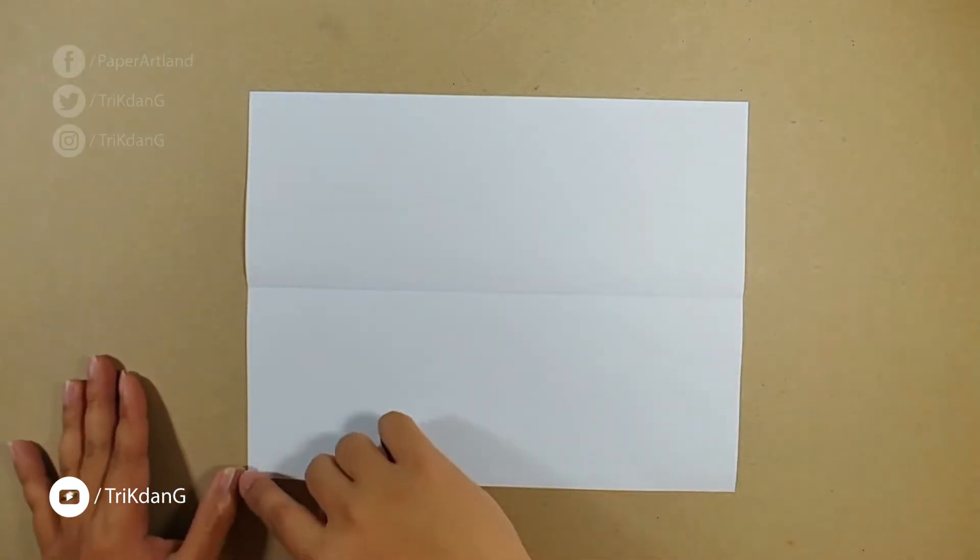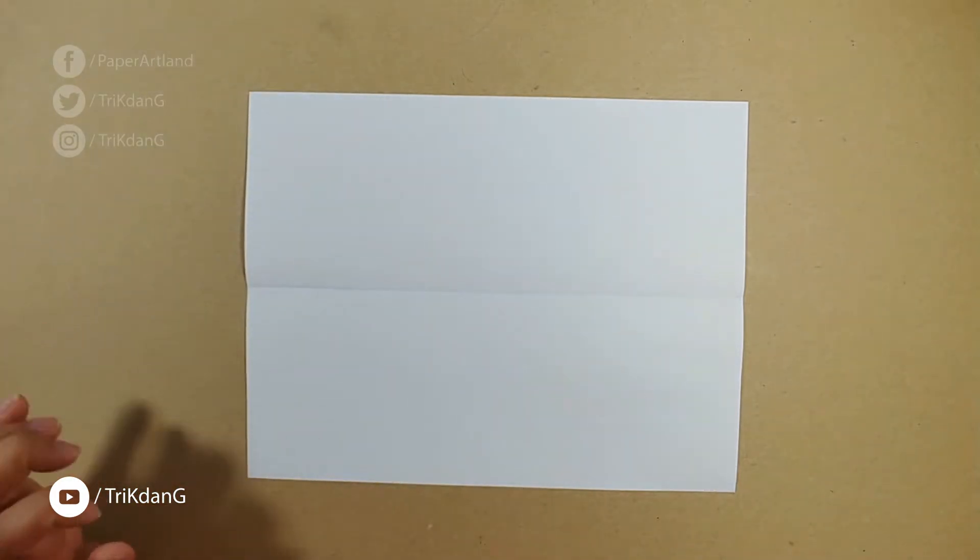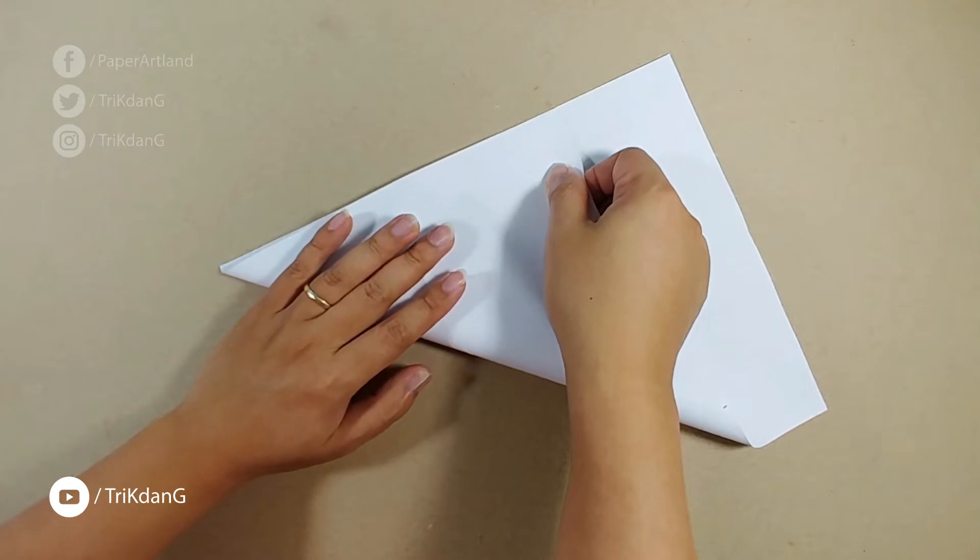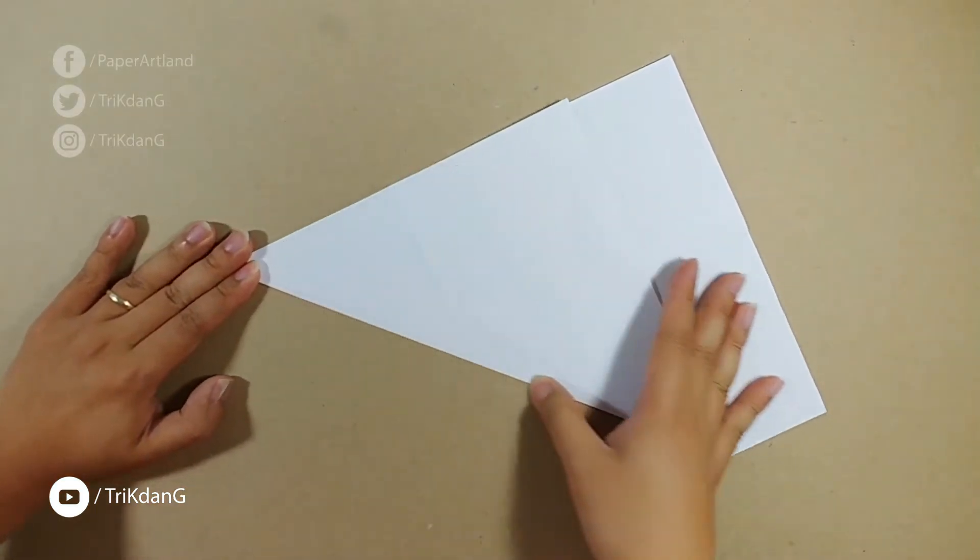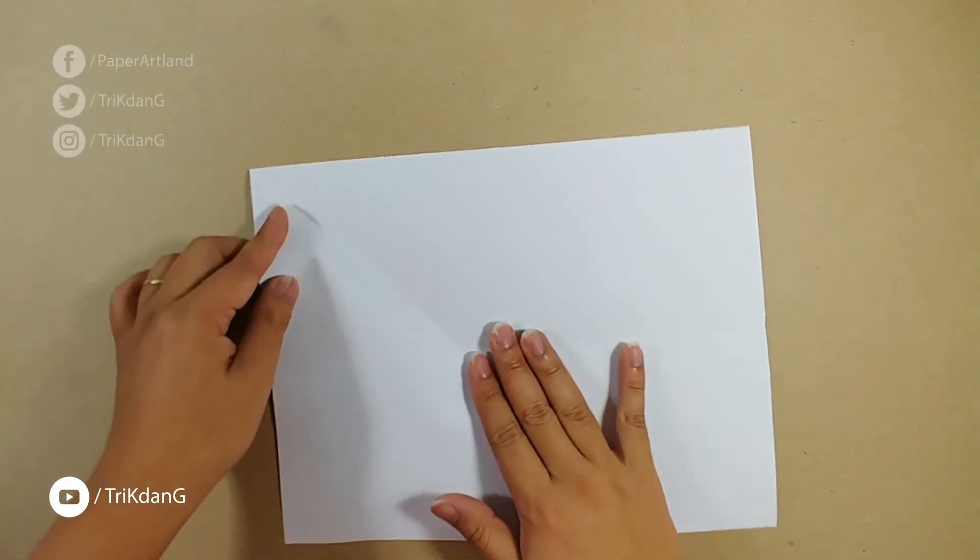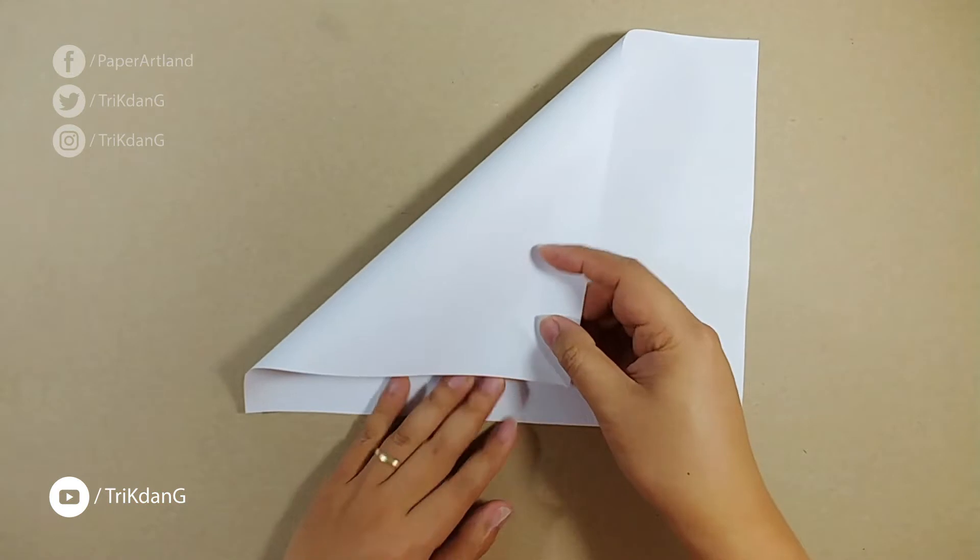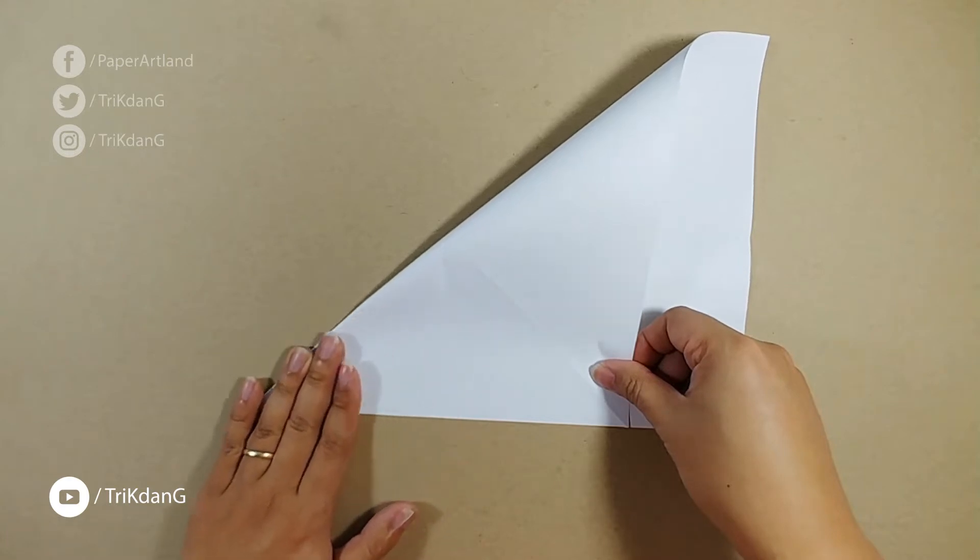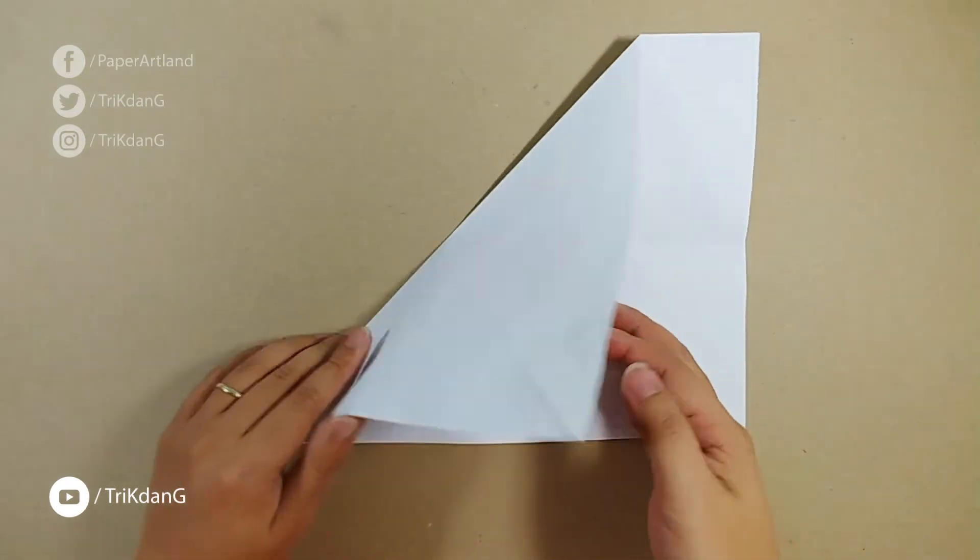On the following step, let's start from this upper edge, fold it to this side, and then unfold. Then start from the upper edge again, fold it to the other side. So now, let's do it. Alright, now let's unfold the paper. Start from this upper edge again, fold it to this side. Now, let's unfold the paper.